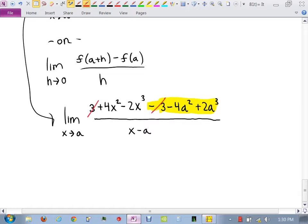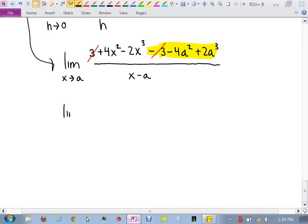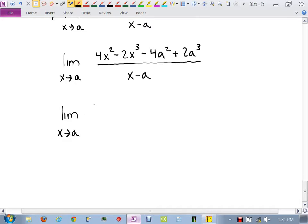The only good thing that happens is the 3s cancel, right? Now when you look at this limit, you can kind of think a little bit ahead as to what it is that you are trying to get to cancel. Like what is it that we want to cancel here? We want to get an x minus a, don't we? So I think what I'll do is I'll put the 4x squared minus 4a squared next to each other, and then I'll do minus 2x cubed plus 2a cubed.